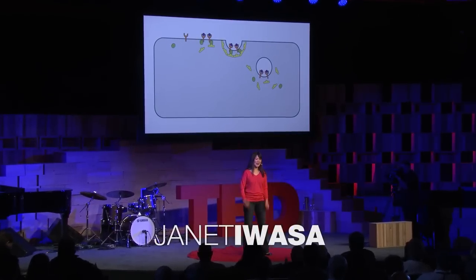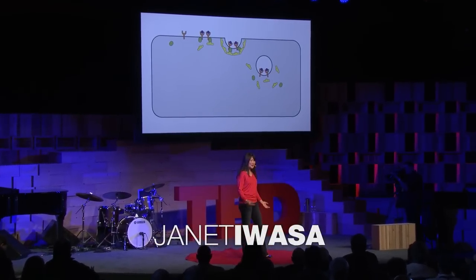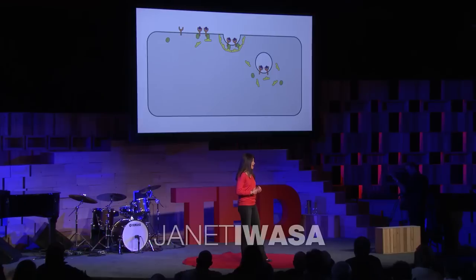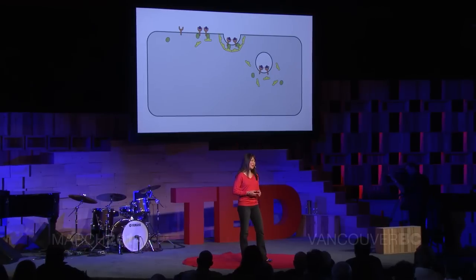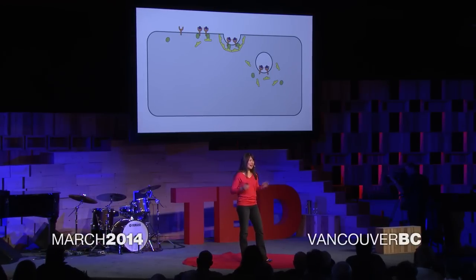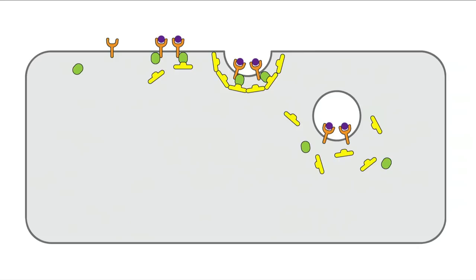Take a look at this drawing. Can you tell what it is? I'm a molecular biologist by training, and I've seen a lot of these kinds of drawings. They're usually referred to as a model figure — a drawing that shows how we think a cellular or molecular process occurs. This particular drawing is of a process called clathrin-mediated endocytosis.